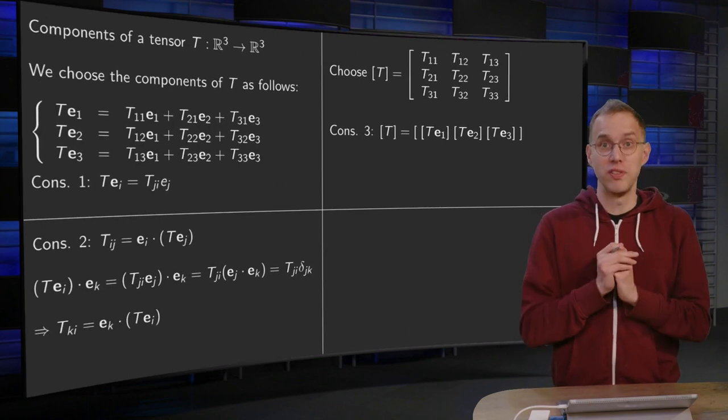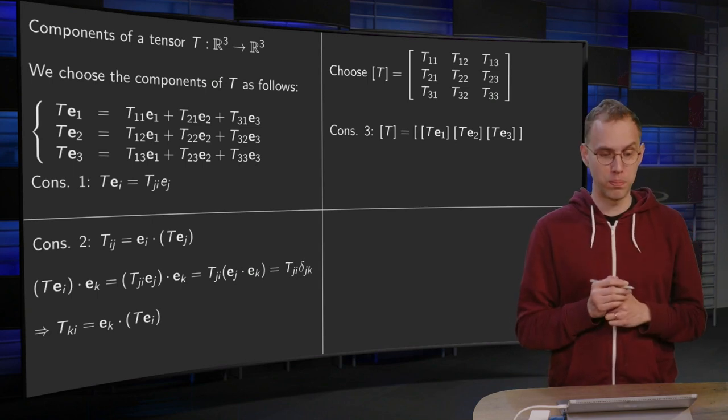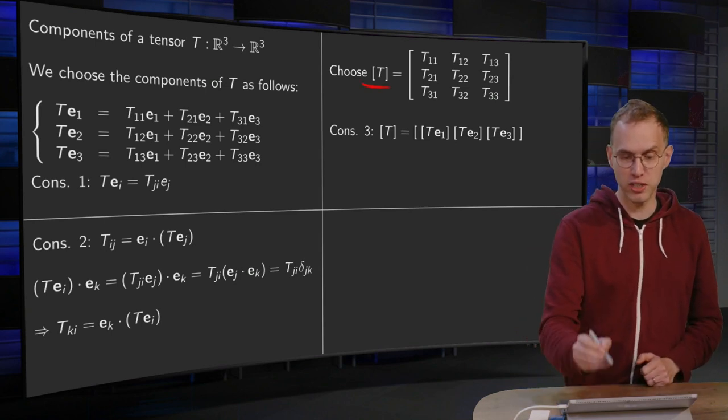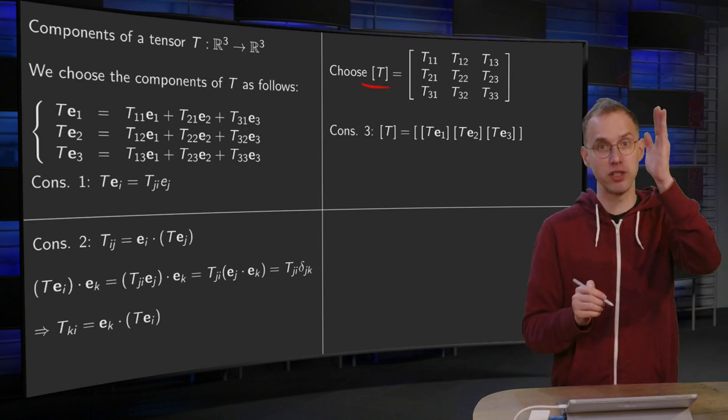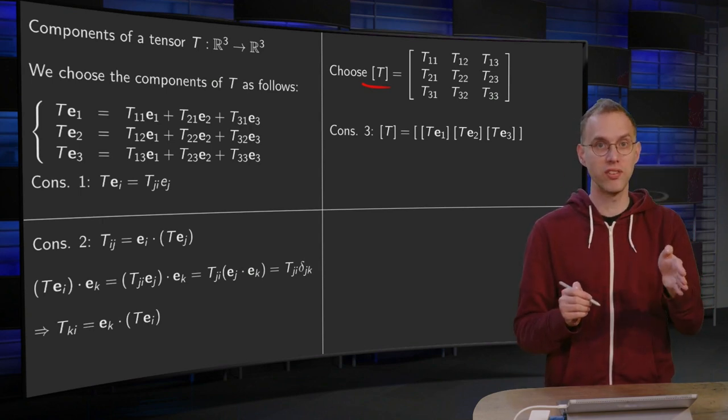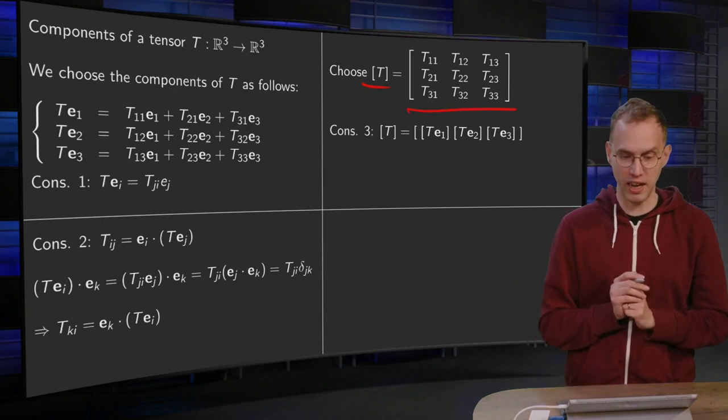Moving on to the relation with linear algebra, now what we are going to do, we are going to put our TIJ in the matrix in the normal way. So we choose the matrix of T as T11, T12, T13, T21, T22, T23, T31, T32, T33, just as it is like here.